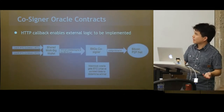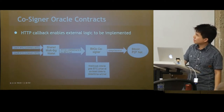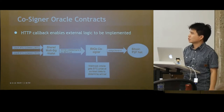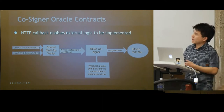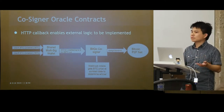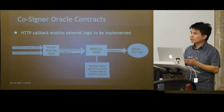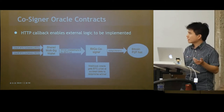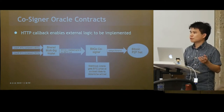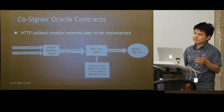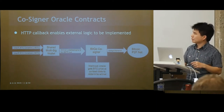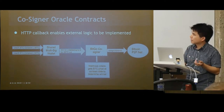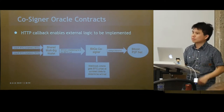A generic use case for co-signers is the HTTP callback oracle. Say two users want to bet on the price of Bitcoin in June — they deposit 2 BTC each into a shared multisig wallet. Come June, the winner creates and signs a transaction for the full amount. When it reaches BitGo, we do basic checks — the beneficiary must be either user A or B — then make an HTTP call to any external endpoint that can execute arbitrary logic to get external state. Only when that oracle replies 'yes' does BitGo co-sign and transmit the transaction to the P2P network.